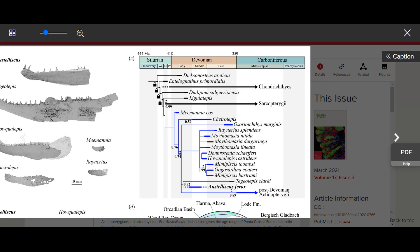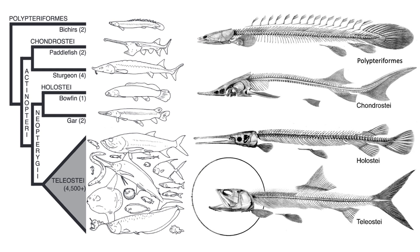The late Devonian Cheirolepis, Osorioichthys, Howqualepis, Mimipiscis, and the aforementioned Moythomasia are also early-diverged lineages of ray-finned fish. Moving within the crown group, the four extant lineages of ray-finned fish in order of phylogenetic divergence are Polypteriformes — two genera of bichirs and reedfish — Chondrostei — two genera of paddlefish and two genera of sturgeons — Holostei — one genus of bowfin and two genera of gars — and finally Teleostei, containing 4,500-plus genera of all other ray-finned fish.